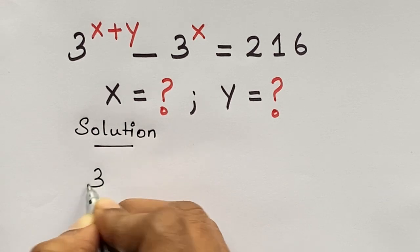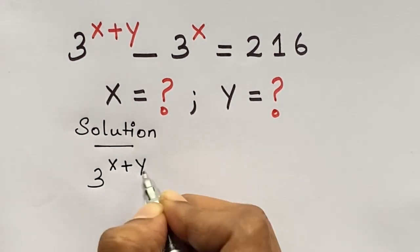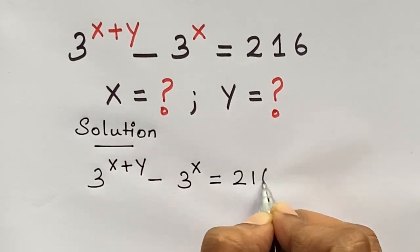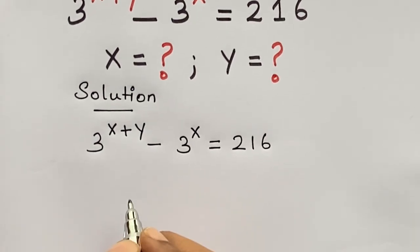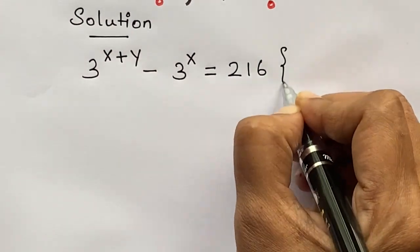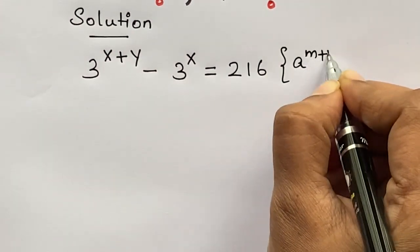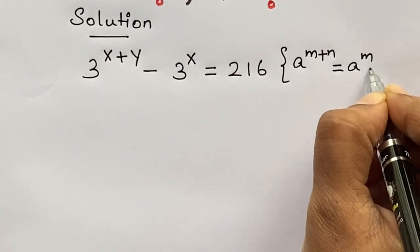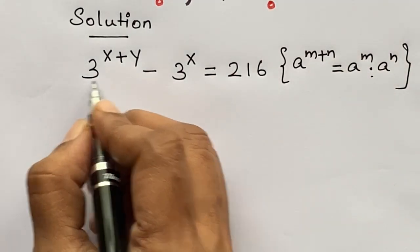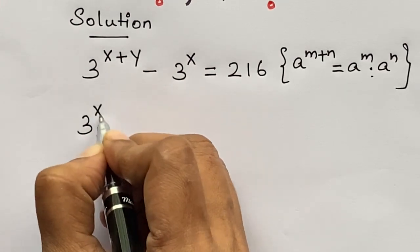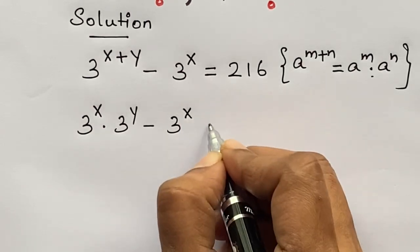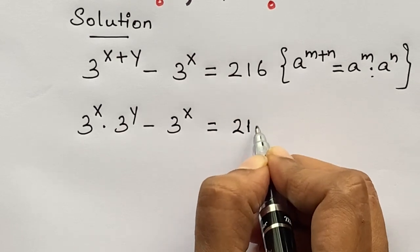So, the given equation is 3 raised to the power x plus y minus 3 raised to the power x equals 216. Here, 3 raised to the power x plus y is in the form a raised to the power m plus n, which can be written as a raised to the power m times a raised to the power n. So let's apply this formula here. We get 3 raised to the power x times 3 raised to the power y minus 3 raised to the power x equals 216.